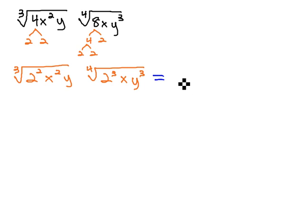The common index we see is 12 between 4 and 3, and to get a common index, we multiply the first index by 4, and the second index by 3, and as we do, we also multiply the exponents underneath the radical by the same thing. So for the 2, 2 times 4 is 8, and for the x, 2 times 4 is 8 again, and for the y's, 1 times 4 is 4.